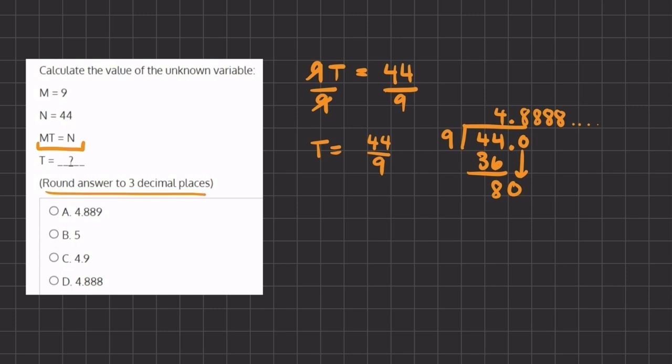In our answer, we have to round to the third decimal place. We look one number to the right, and because it is greater than 5, we bump up our third number to 9. So our final answer is 4.889.